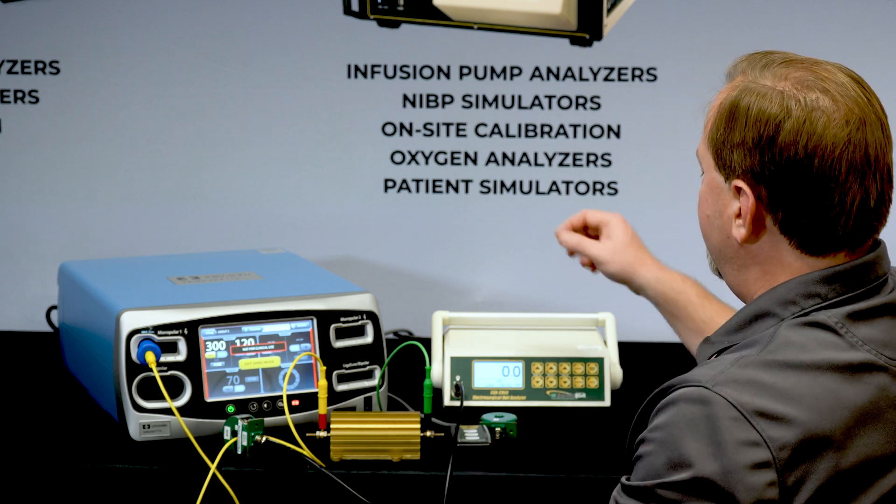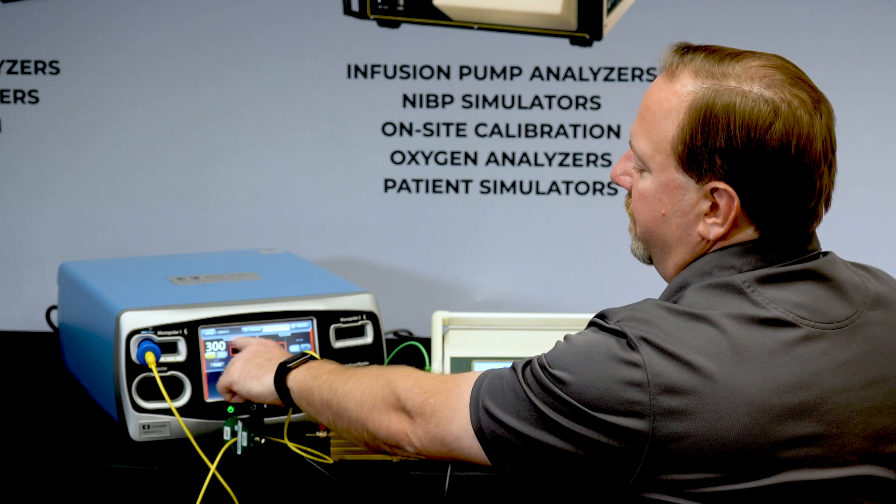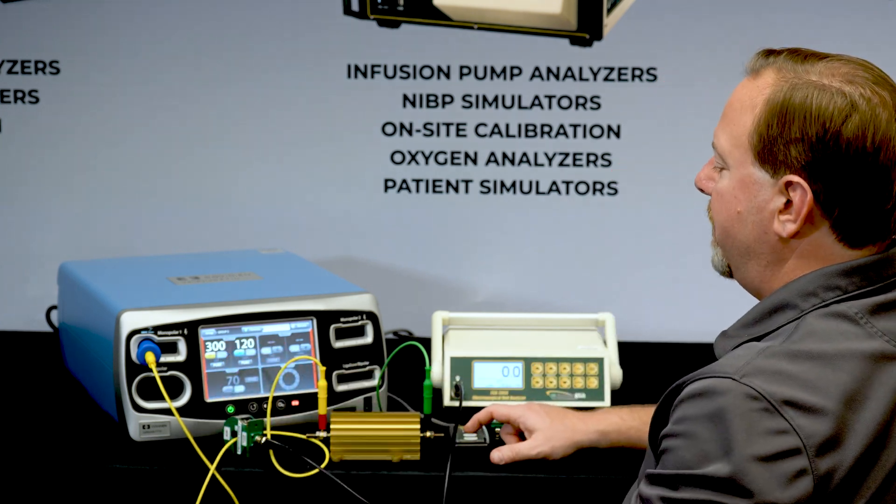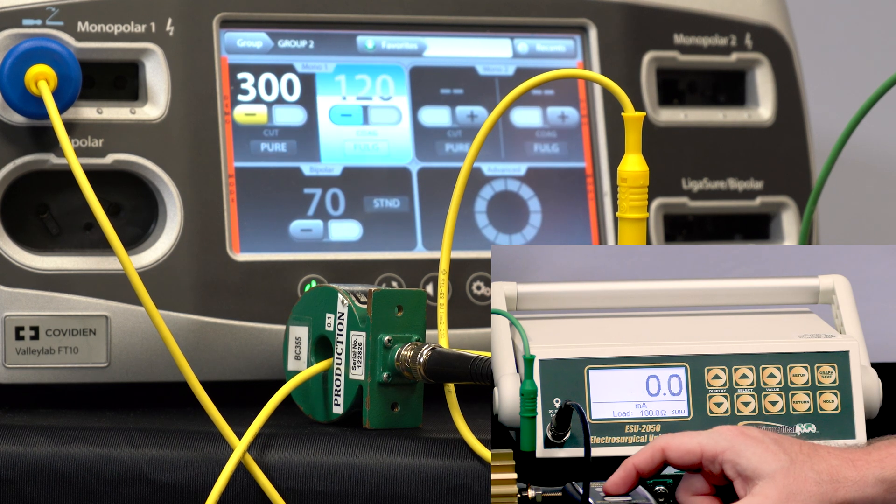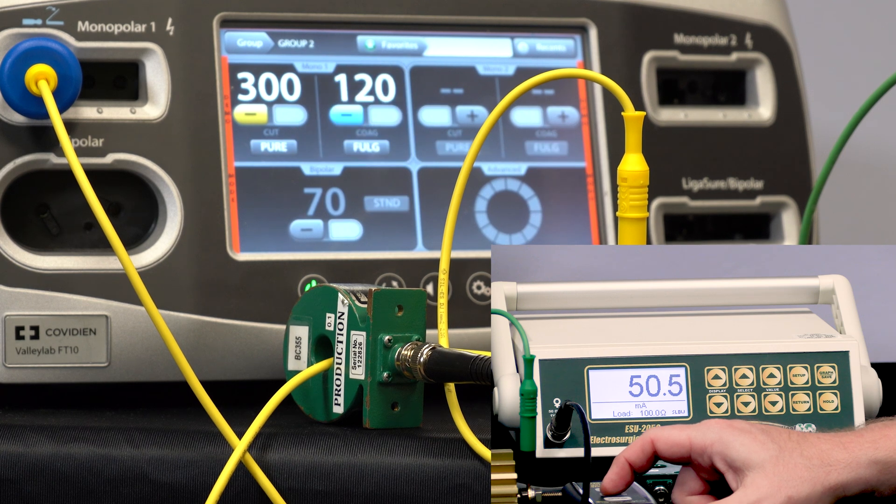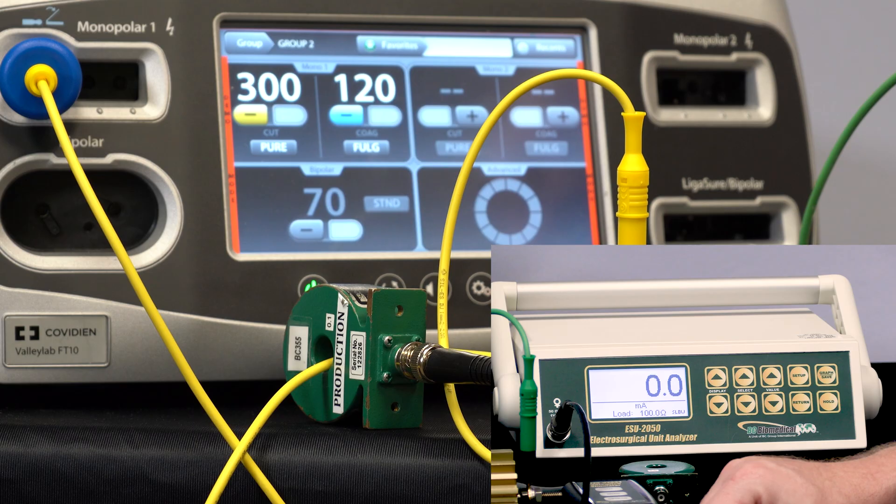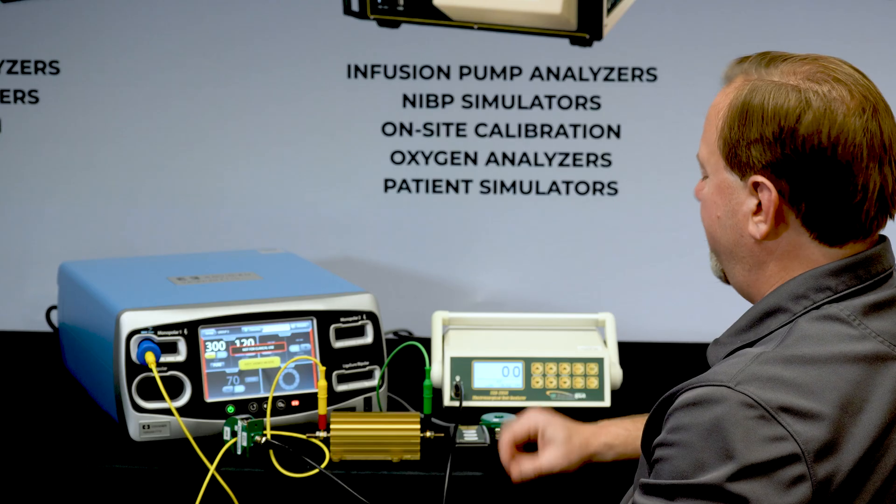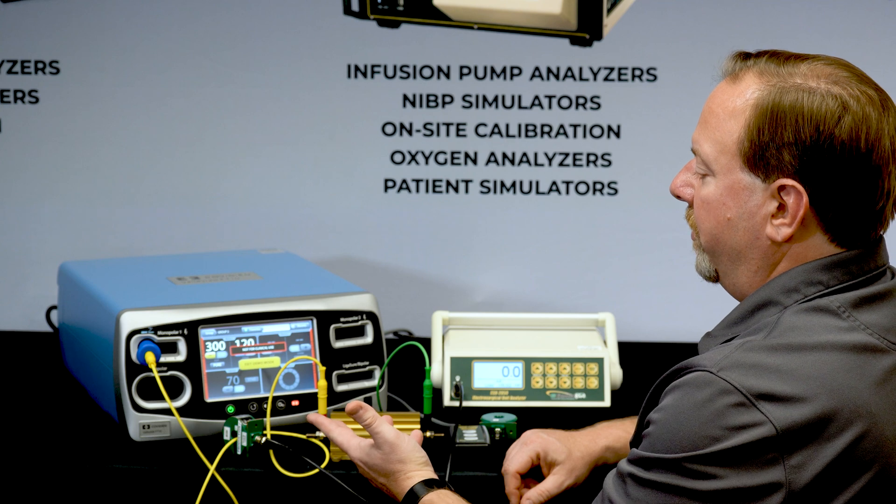And so we can trigger the generator typically with the maximum power setting for each mode. So for cut that's going to be 300 watts and coag that's going to be 120 watts. So then we can get our measurement and compare that to the limit and make sure that this device is safe. Typically it's 100 milliamps. So that's the monopolar one port test.